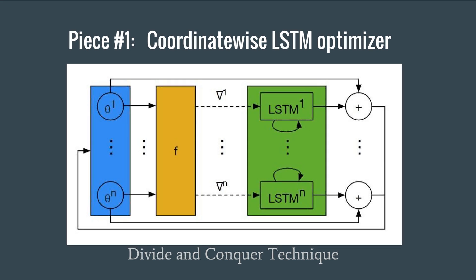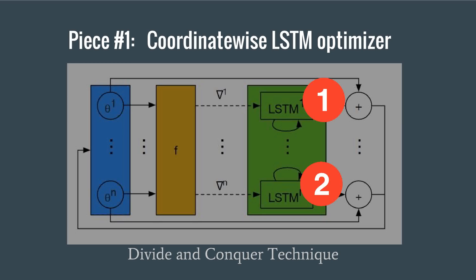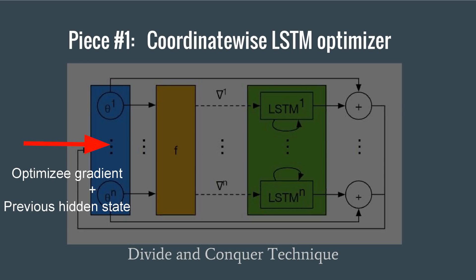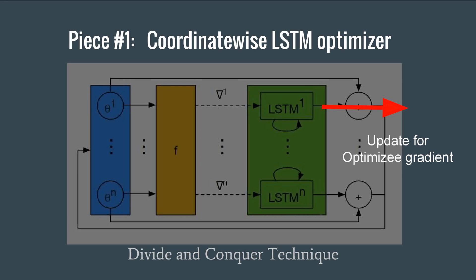So did the authors do well? They use a very small network looking at a single coordinate to define the optimizer, sharing it across different parameters of the optimizee. The updating rule is implemented using a two-layer LSTM network. The input of this mini network are the optimizee gradient and the previous hidden state, and the output is the update for the corresponding optimizee parameter.